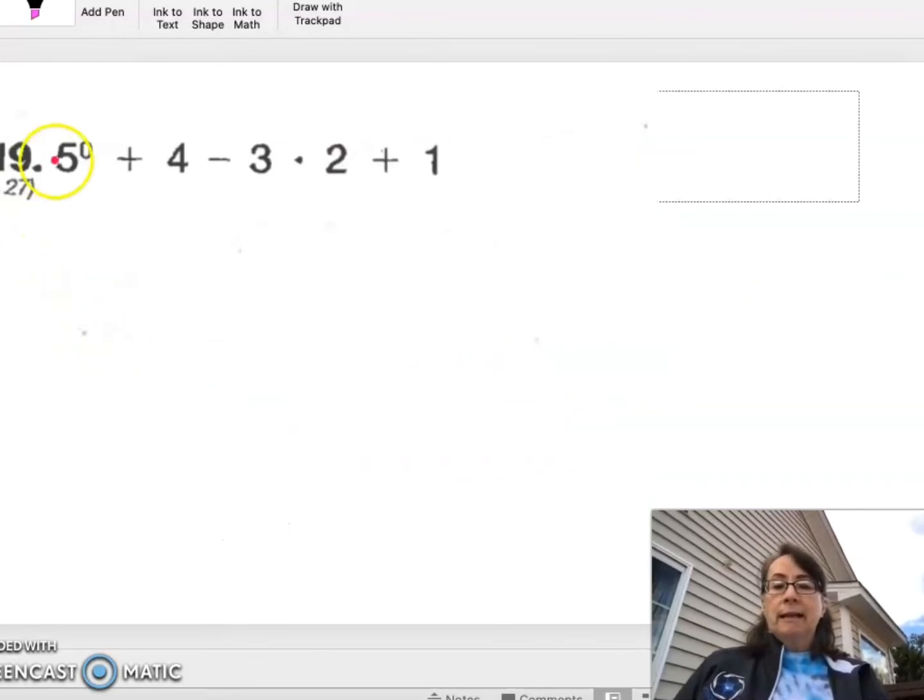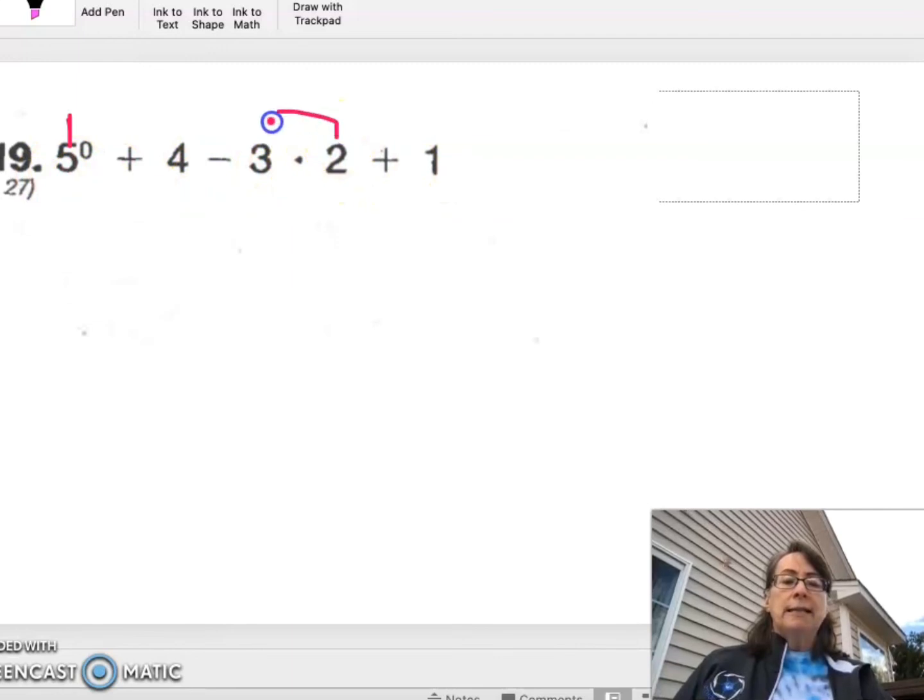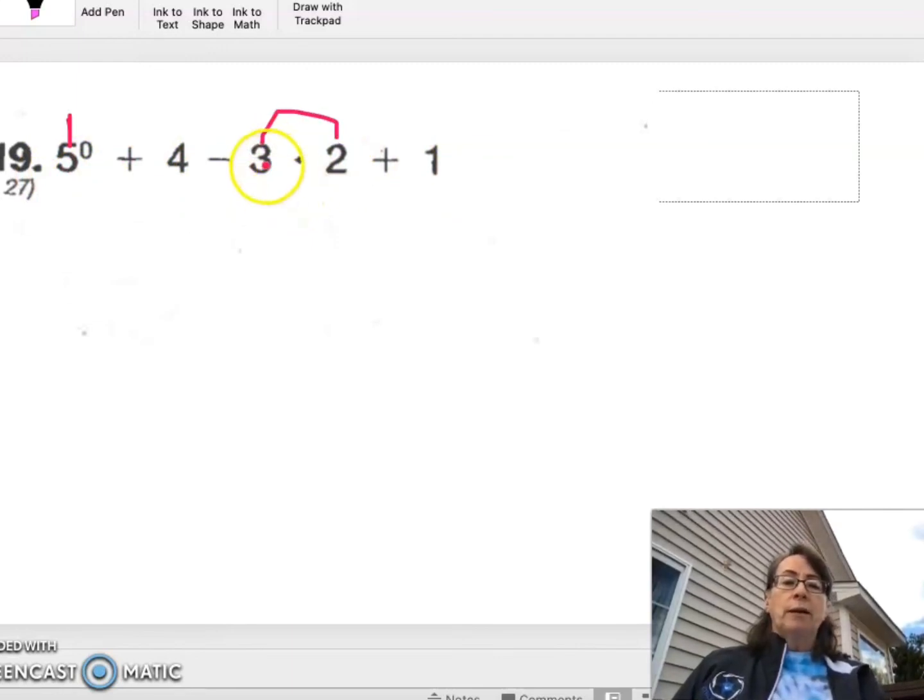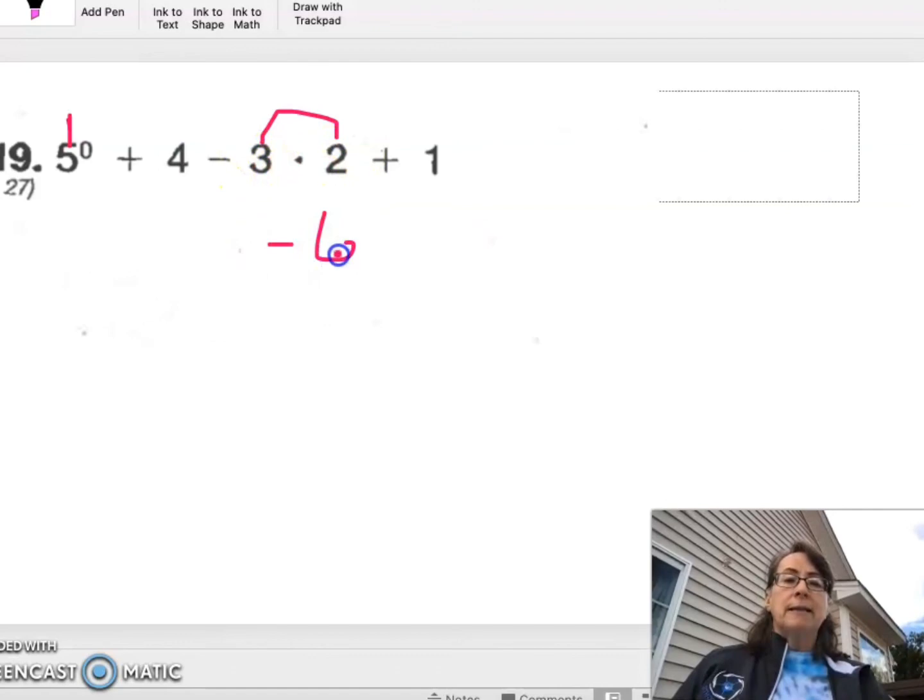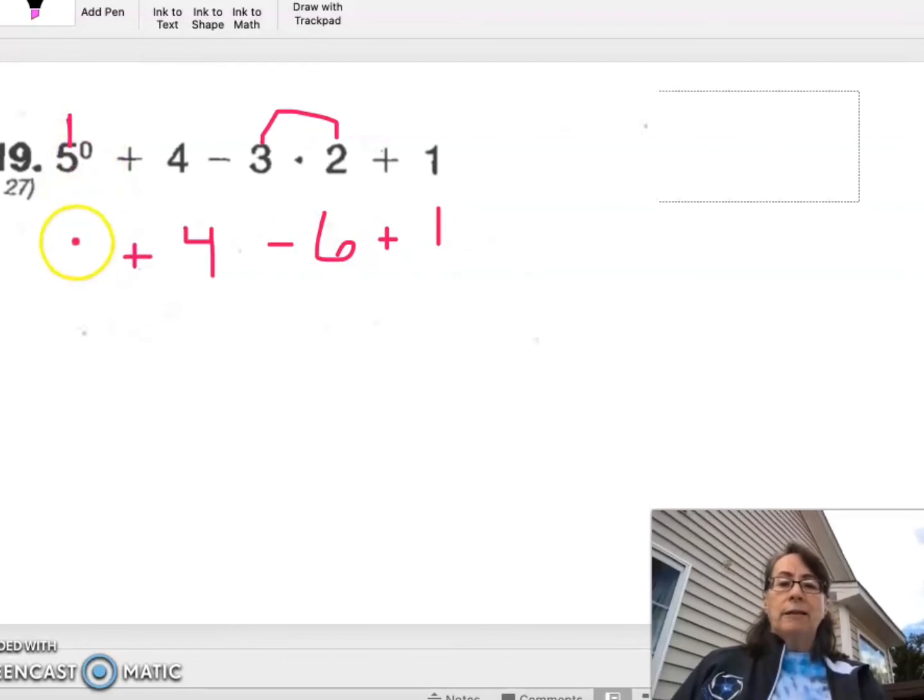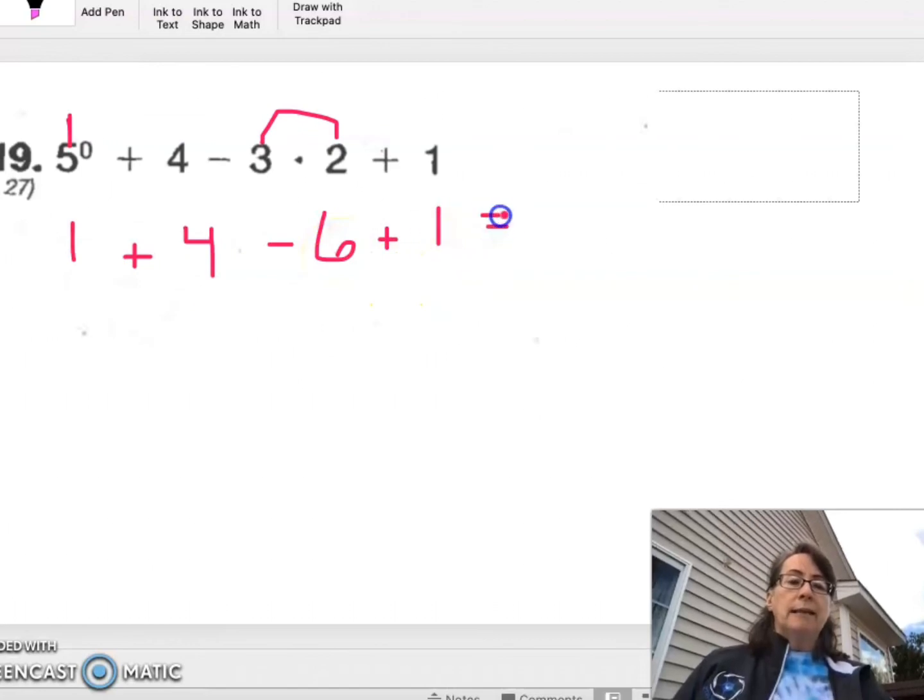Number 19. We have 5 to the 0 is 1 plus 4 minus 3 times 2 plus 1. This multiplication is the highest priority. So we're going to say 3 times 2 is negative 6 plus 1. A 4 is on the other side. Plus 5 to the 0 is 1. Now everything is plus or minus. I'm going to go left to right. 1 plus 4 is 5. 5 take away 6 is negative 1. Plus 1 is 0.